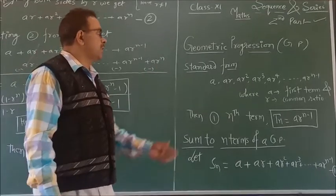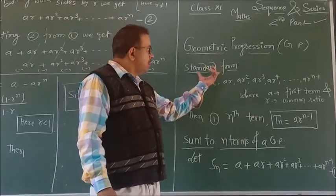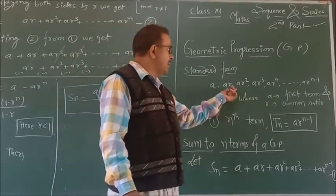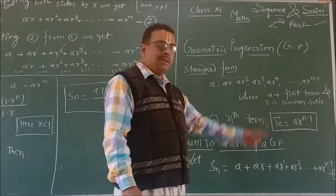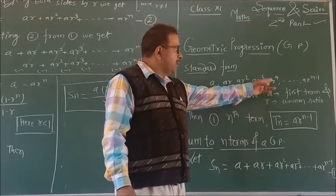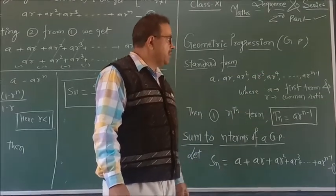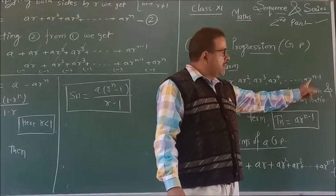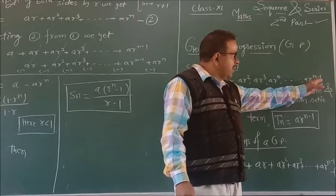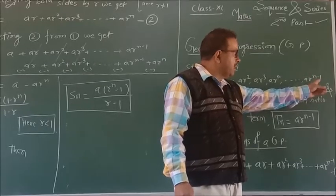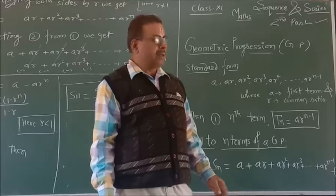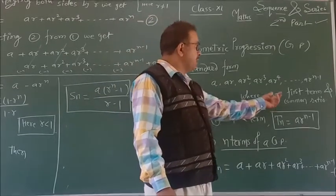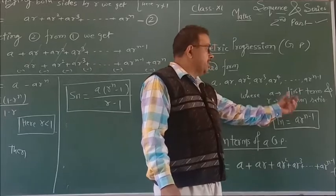Now, what is geometric progression? The standard form of geometric progression is: a, ar, ar², ar³, ... up to ar^(n-1). The next term would be ar^n, and so on. Here, a is the first term and r is the common ratio.